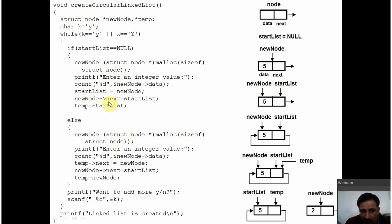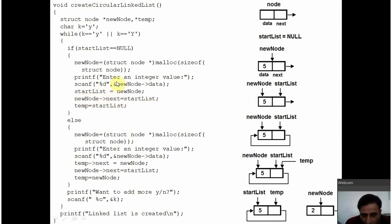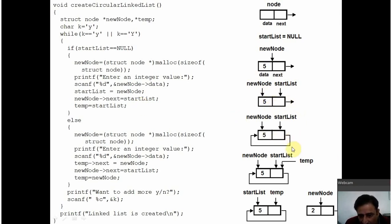Recall that the node comprises of two members — one is data for keeping the data, and the second is the pointer next which will point to the next node. You are asking the user to enter an integer value for the data member of the new node. Suppose the user enters 5 — that will be assigned to the data member of newNode. StartList pointer is set to point at newNode. To make this node appear as a circular linked list, you are making the next pointer of newNode point at startList — so it is pointing at itself. This statement makes it appear as a circular linked list.